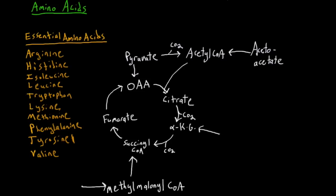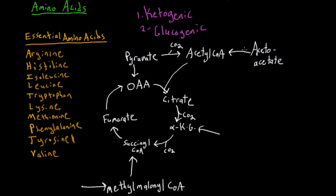So that covers our essential amino acids. What about the amino acids we can synthesize ourselves? There are two major categories of amino acids that we can metabolize ourselves. The first are ketogenic and the second are glucogenic. There are a lot more glucogenic than ketogenic. Essentially, metabolizing ketogenic amino acids produces acetoacetate — ketones — while metabolizing glucogenic amino acids produces glucose.